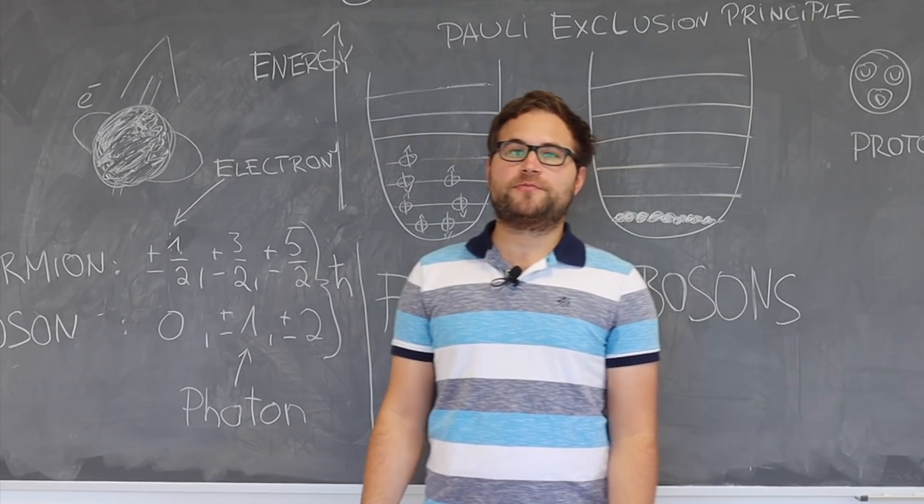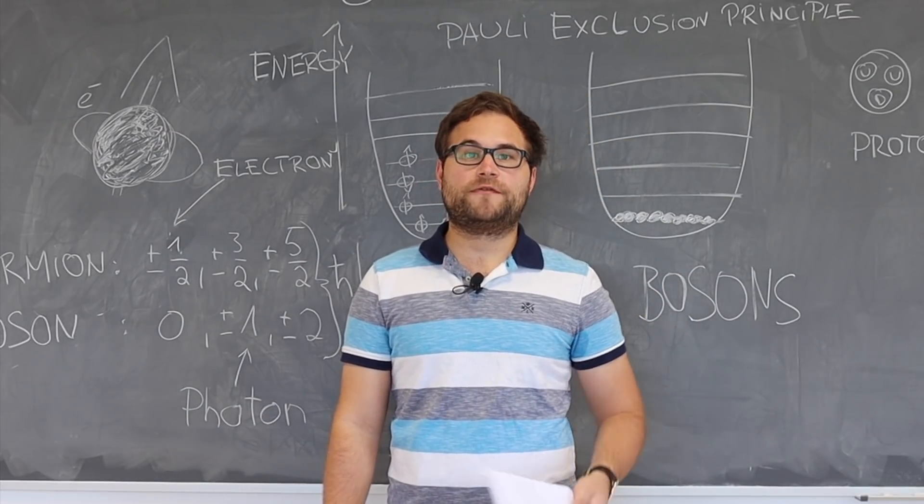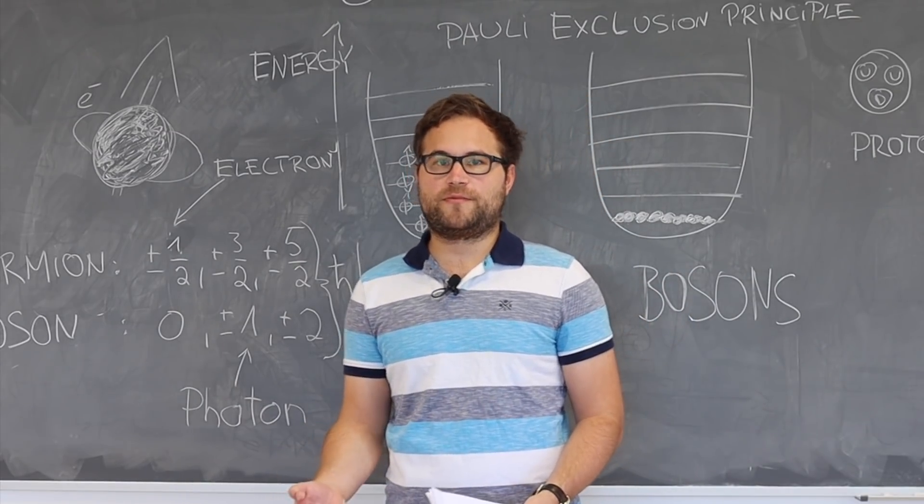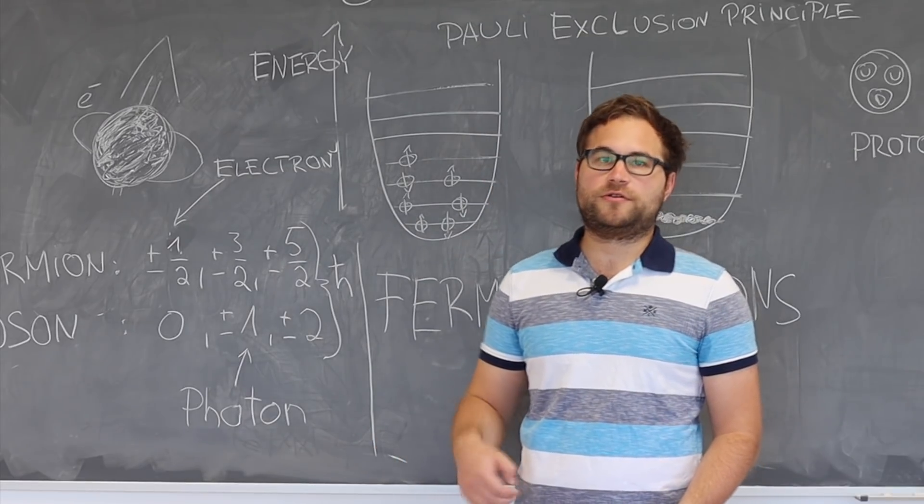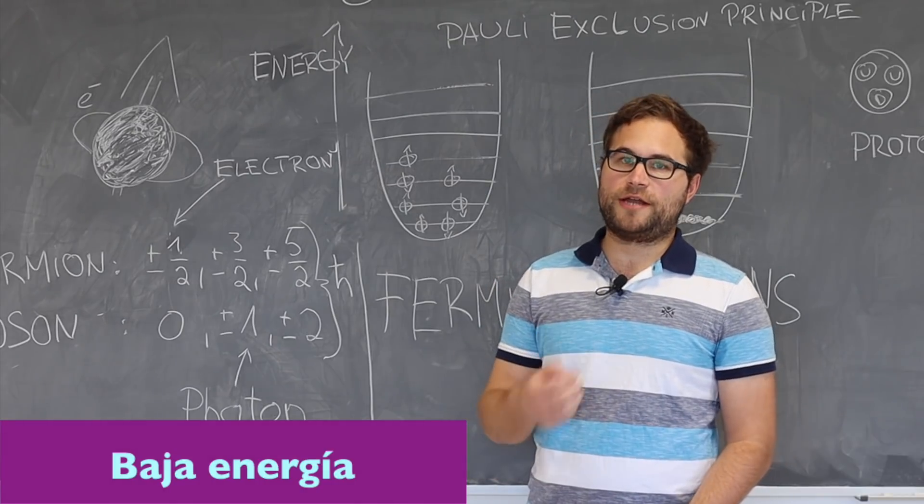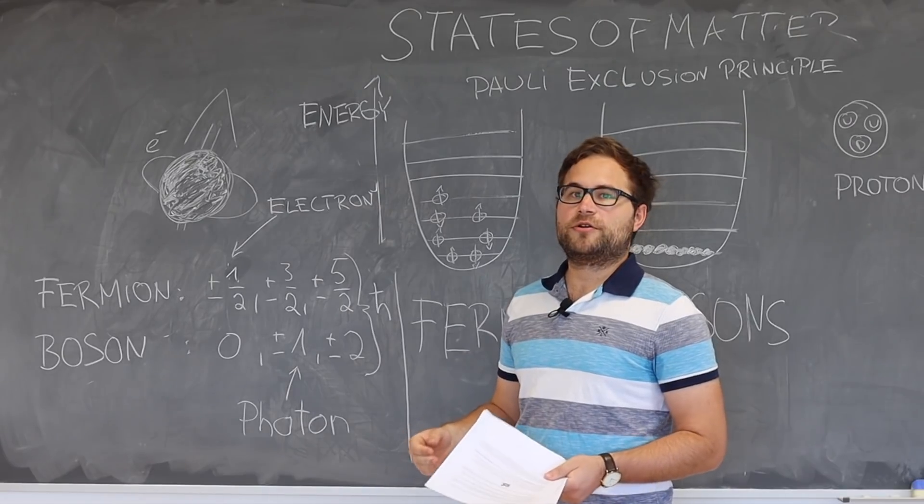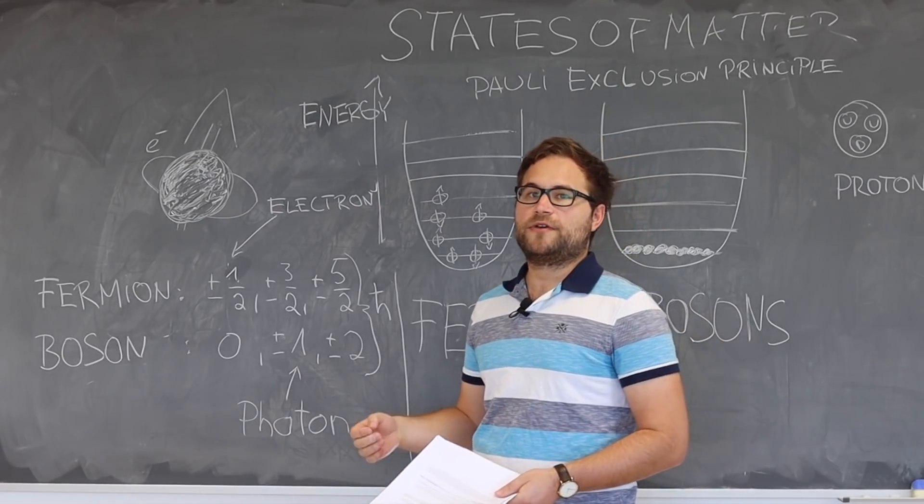At this point most of the discussions about states of matter end. However, there are a lot more modern states of matter which can be classified into low energy and high energy states. In the following, I want to focus on a low energy state called the Bose-Einstein condensate.